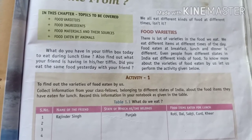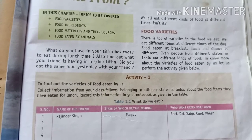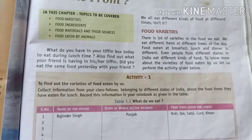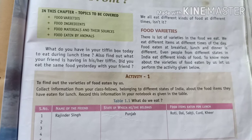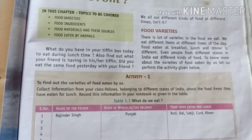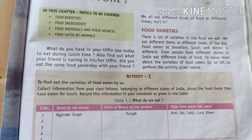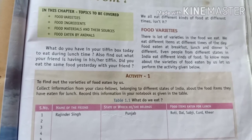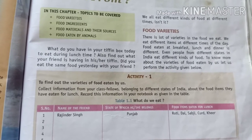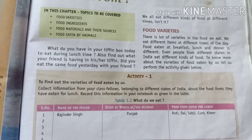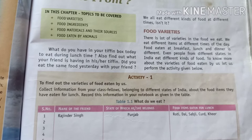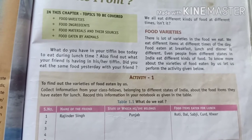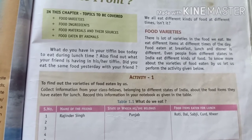We eat different items at different times of the day. Yaani ki ek hi din mein hum log kai tarah ke bhojan alag-alag times pe karte ho. Food eaten at breakfast, lunch and dinner is different. Jo bhi hum log khaate — breakfast kuchh aur kiya, lunch kuchh aur kiya, sham ko khaana hum log jo khaya woh kuchh aur tha. Even people from different states in India eat different kinds of food.